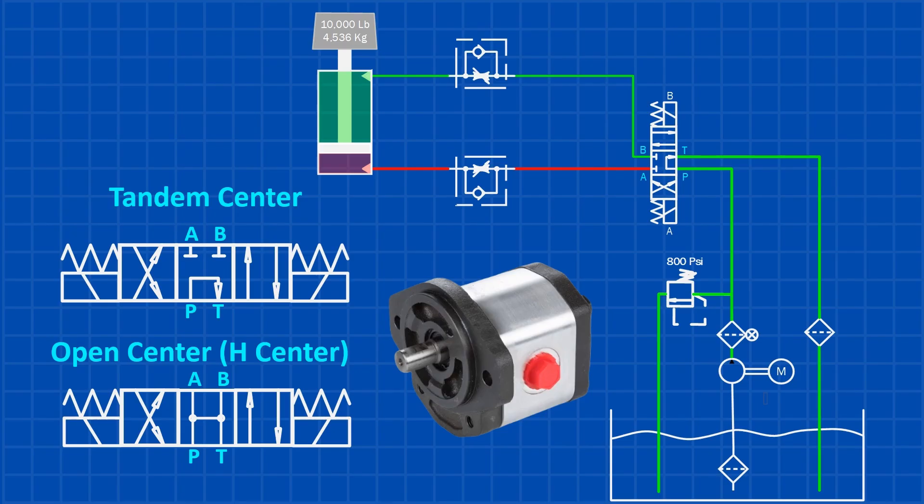Gear pumps work well with tandem or open-center directional valves. In the center position, the pump's flow returns to the tank at nearly zero pressure, putting no load on the motor or pump. They're also a good choice when paired with an air motor that turns on only when needed using a solenoid. However, gear pumps aren't ideal for running continuously at a constant pressure.